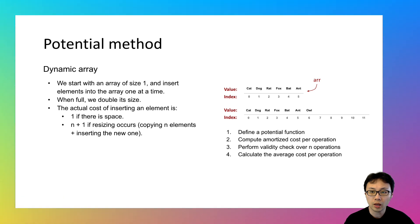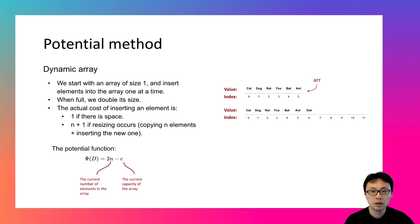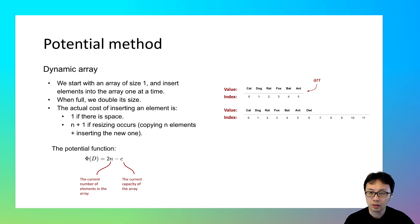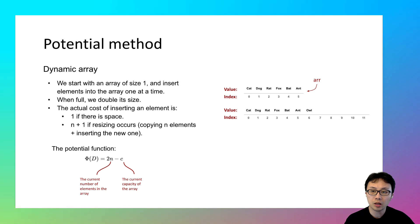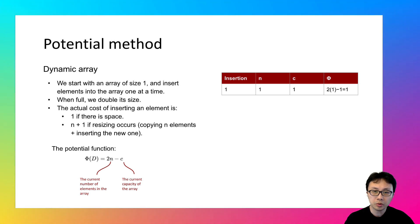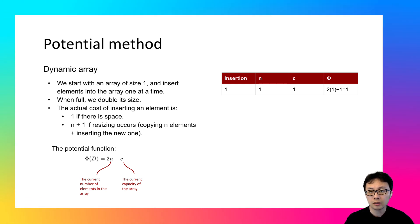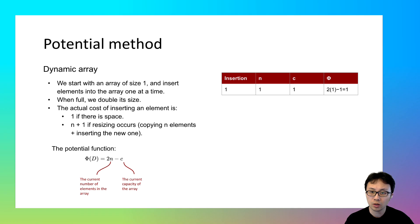To apply the potential method to the insertion operation, we follow the four steps, starting with the potential function. We can use a simple linear function: phi = 2n - c, where n is the number of elements in the array and c is the capacity. The initial potential when the array is empty is 0. After the first insertion, n becomes 1 and c stays 1, so the potential computes as 2 × 1 - 1 = 1.